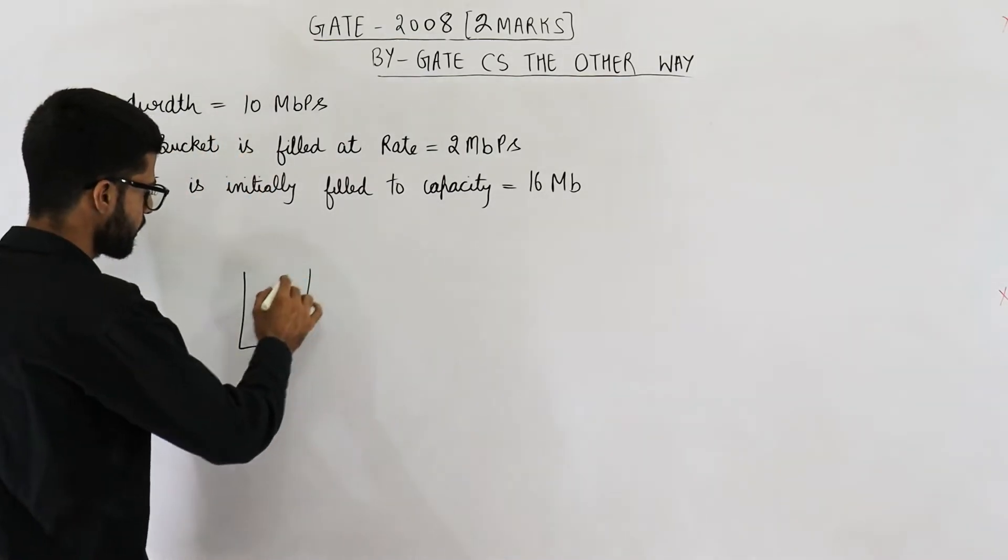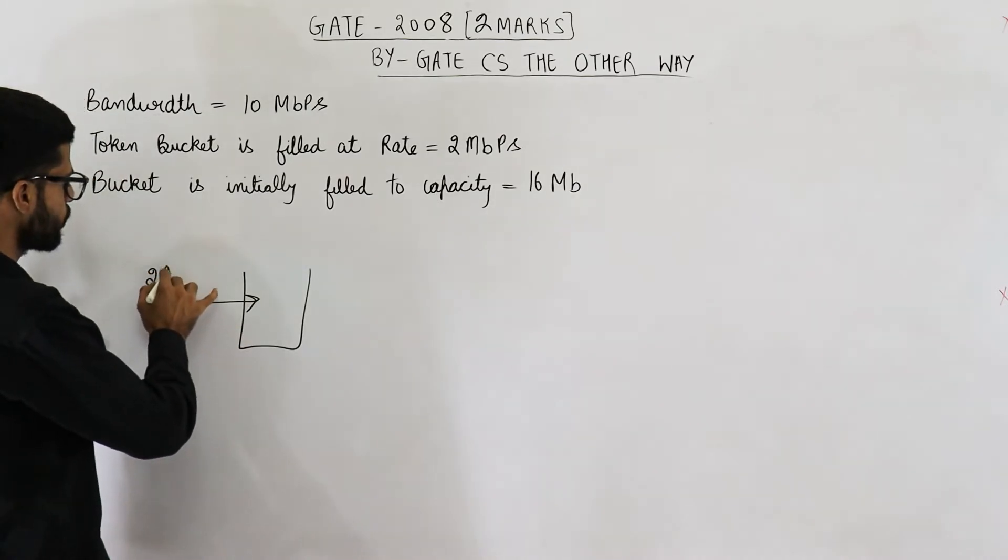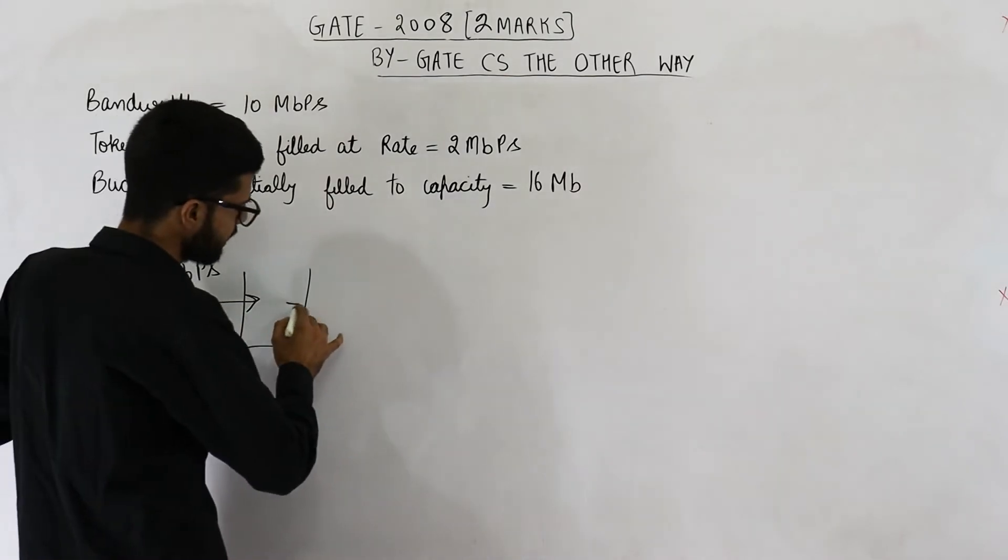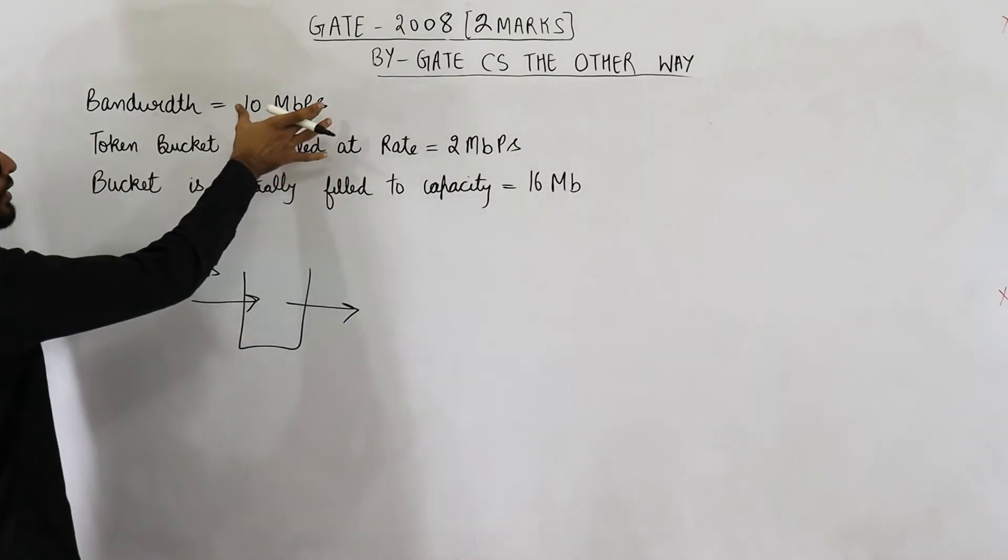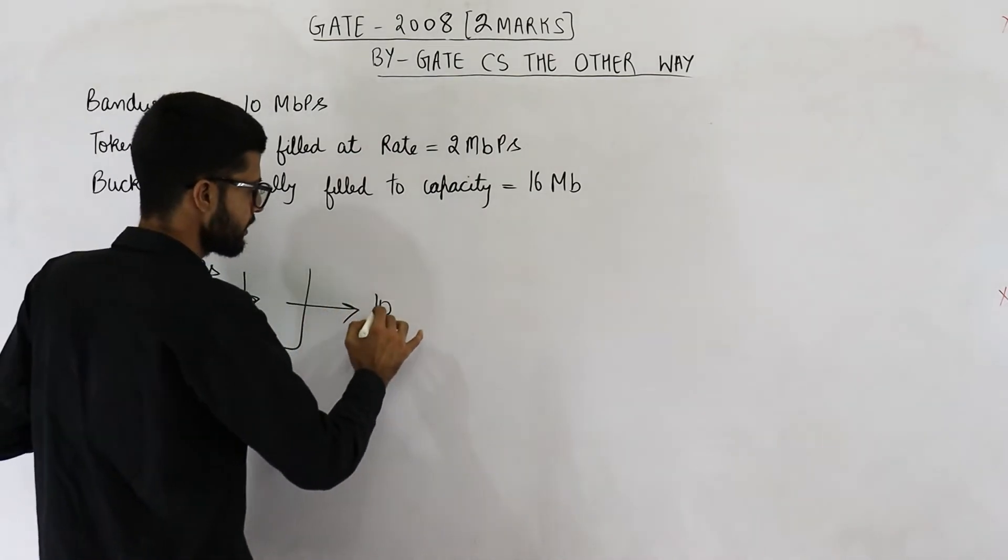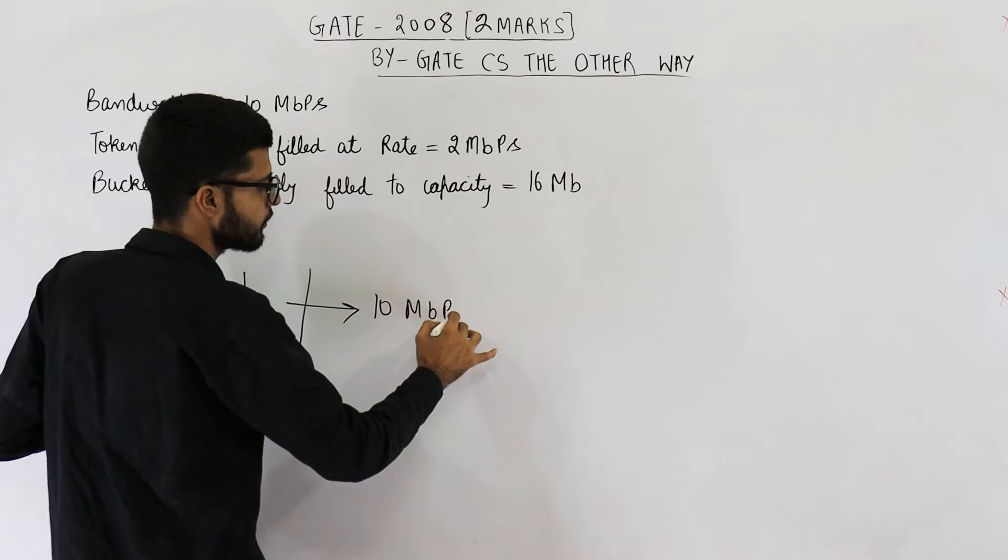Now see, if this is the bucket, tokens are being generated at a rate of 2 Mbps. And we are taking away tokens at this rate if we are sending data at maximum capacity. So tokens are being withdrawn at a rate of 10 Mbps.